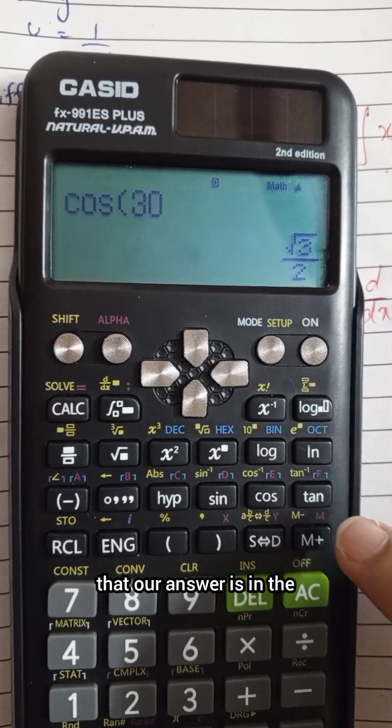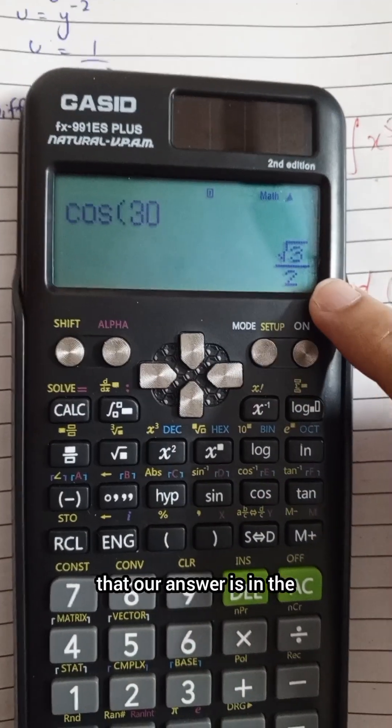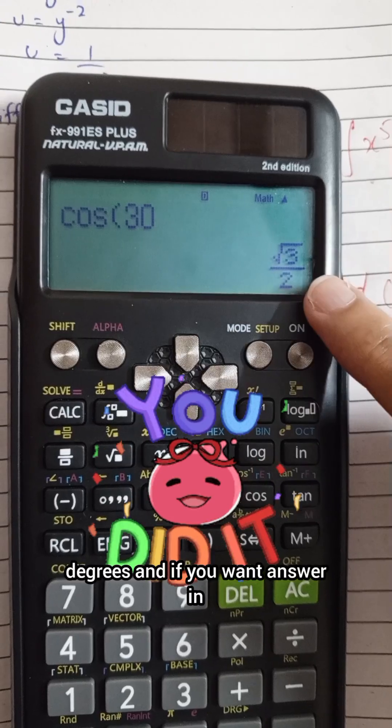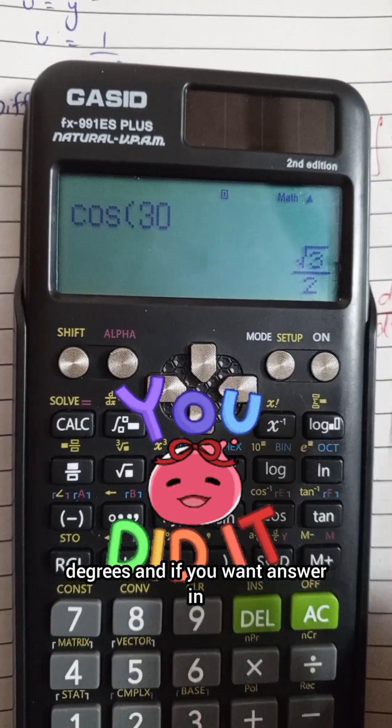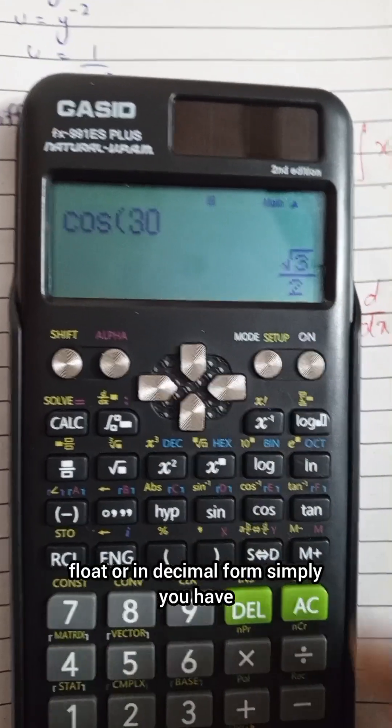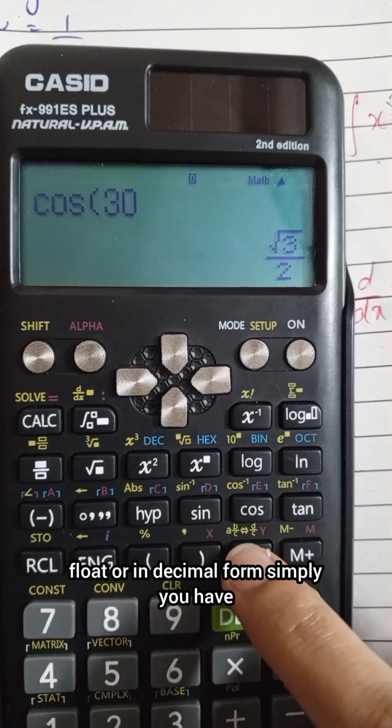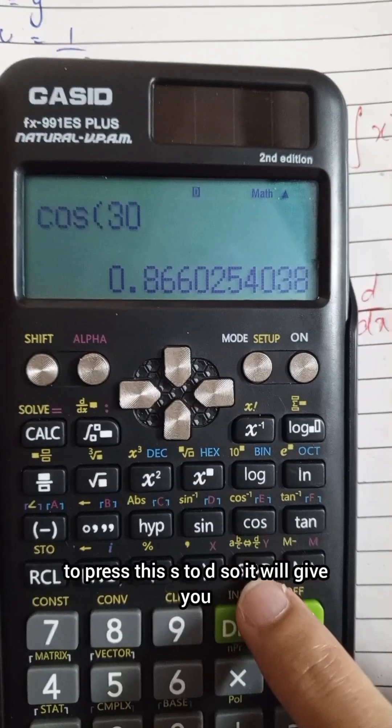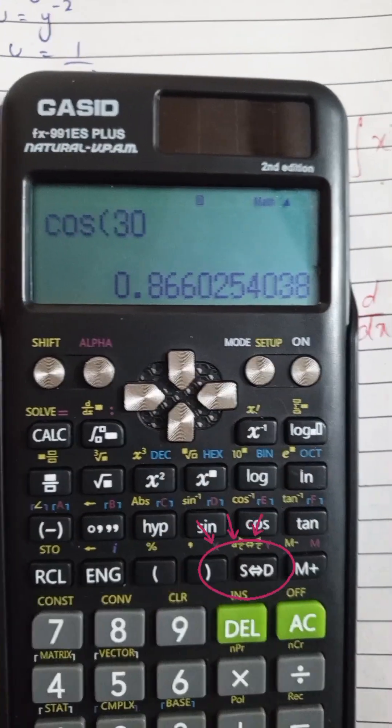Now you can see that our answer is in degrees. If you want the answer in float or decimal form, simply press S→D and it will give you the answer in decimal form.